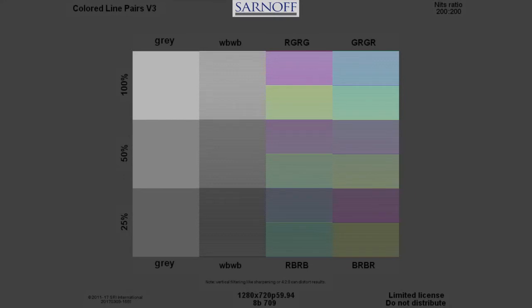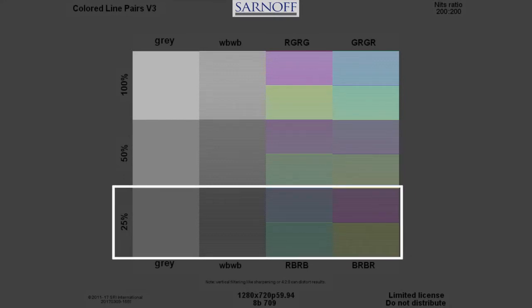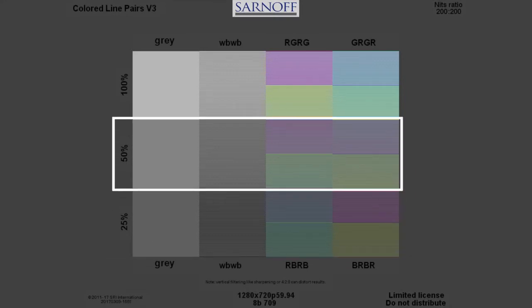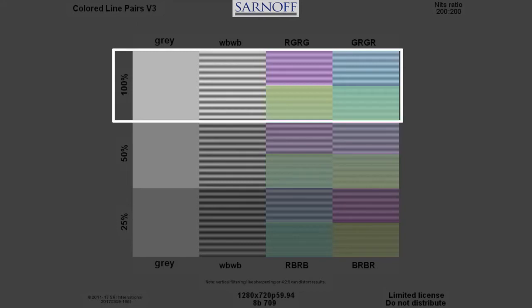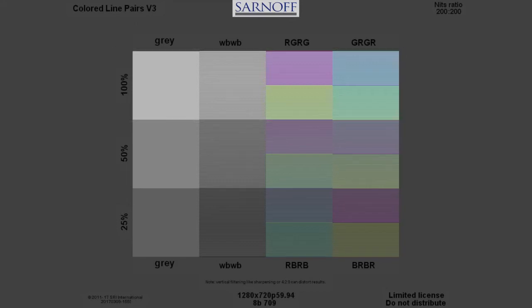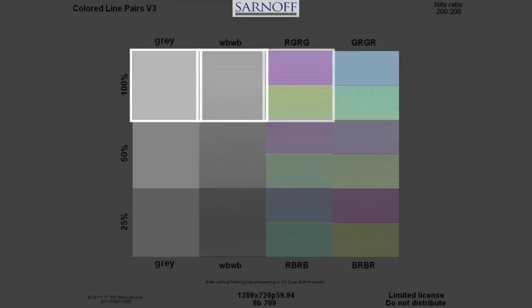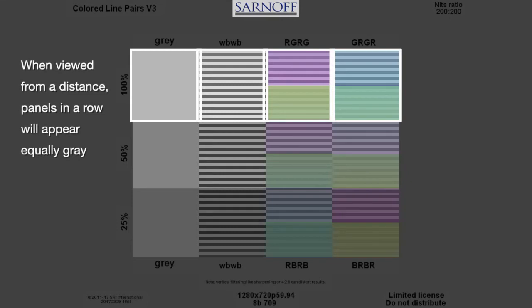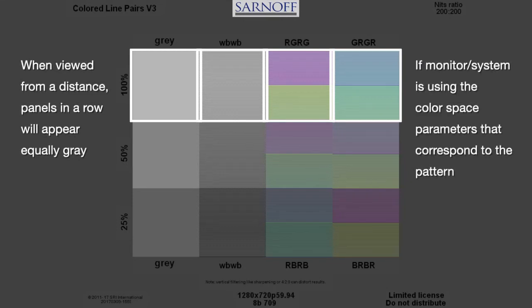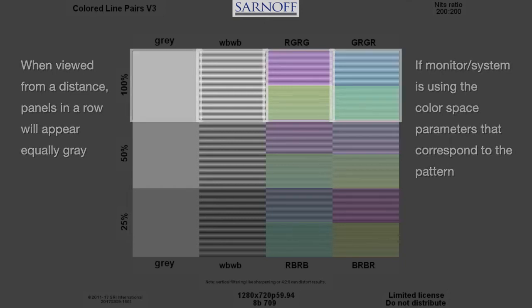The pattern consists of three rows at 25%, 50%, and 100% of diffuse white, each row consisting of four panels that will appear equally gray from a distance if the monitor or system is using the color space parameters that correspond to the pattern.